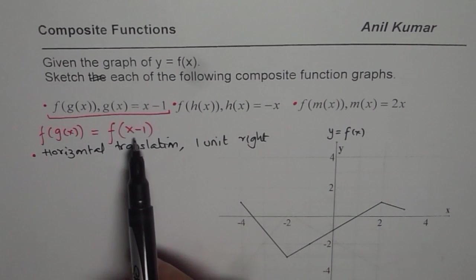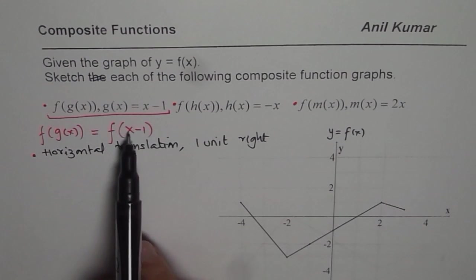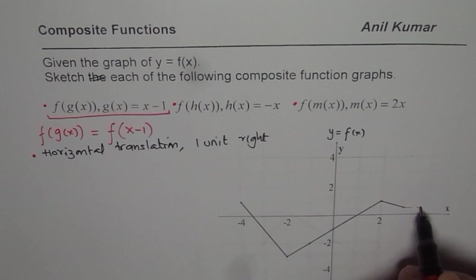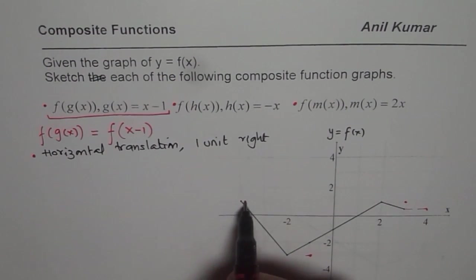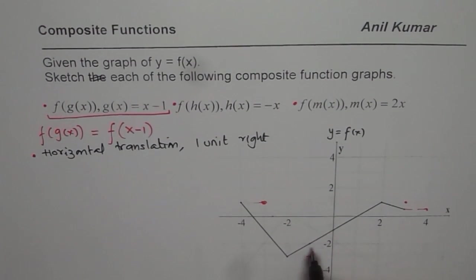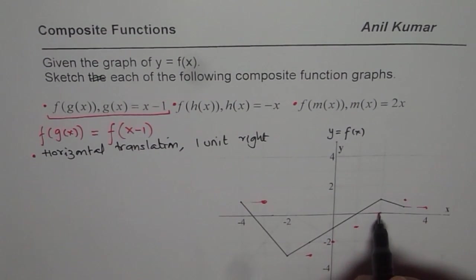What we really get is, if g of x is x minus 1, then the function becomes f of x minus 1. That means I have to shift every unit one unit to the right. So this is at 3, it will go to 4. This is at 2, it will come at 1. This is at minus 2 horizontally. So y values remain same. So this will shift to this place. This intercept is kind of here. So this x-intercept will be here. So every point will be moving one unit to the right.